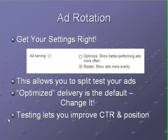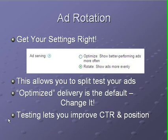The first piece of this puzzle is ad rotation, and it's amazing to me how many people think that they're testing ads but don't have their setting right, so they're actually only testing one ad. To get your settings right, go into your campaign settings for each of your campaigns and look down at the bottom of the screen for the ad serving options. This allows you to split test your ads and take control of the number of impressions that each ad will get.